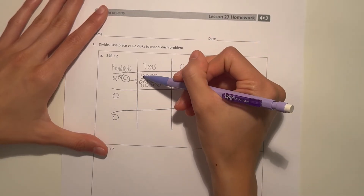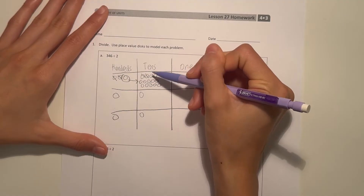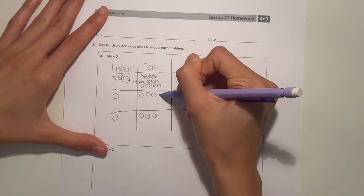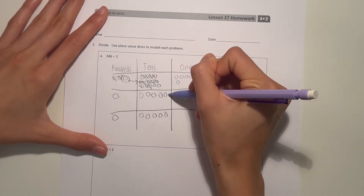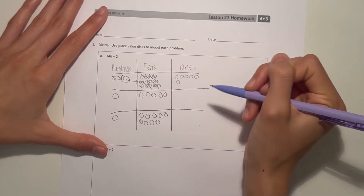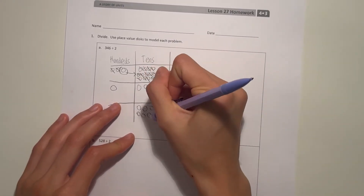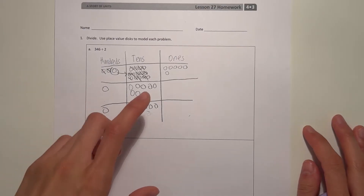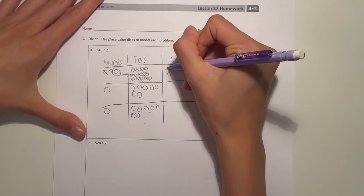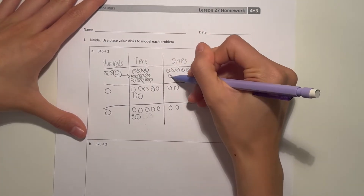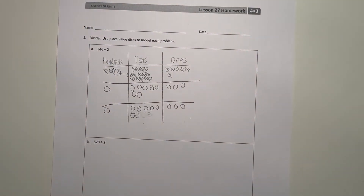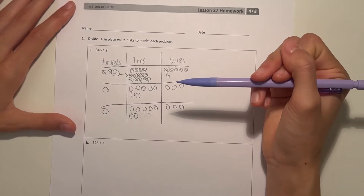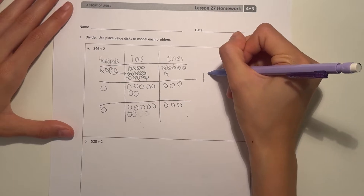Now we divide the tens. We count out fourteen tens total and divide them up between the two groups. Then we go to the ones — we have six ones, so we just divide them up equally. So now we have one hundred, seven tens, and three ones. So our answer would be one hundred seventy-three.